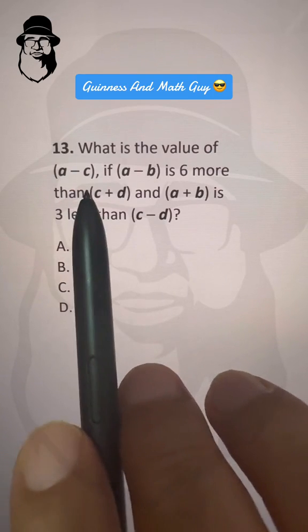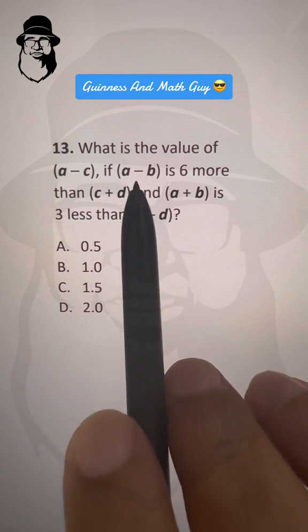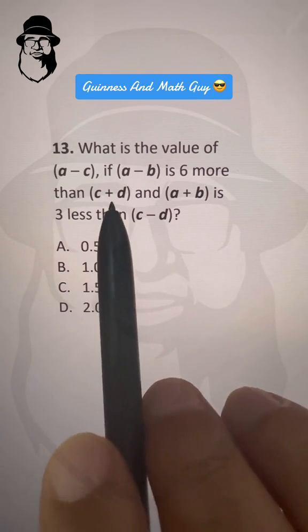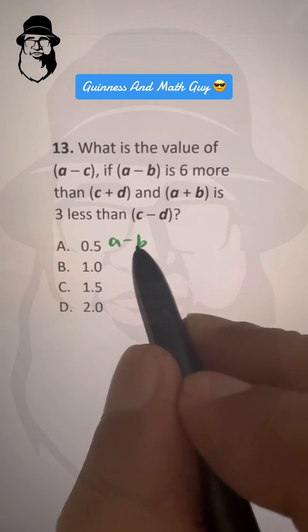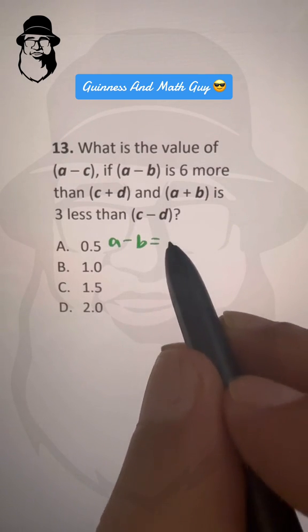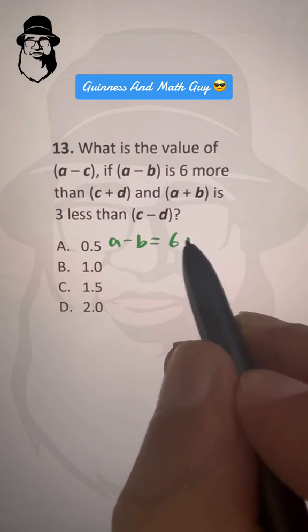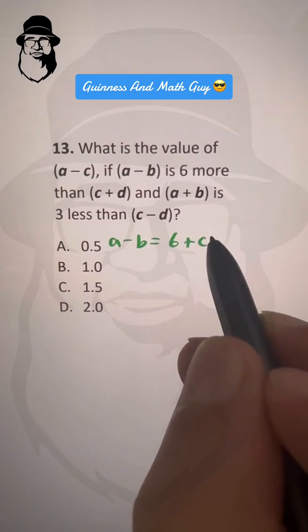What is the value of (a - c)? If (a - b) is 6 more than (c + d), let's write this: (a - b) equals (c + d) + 6.